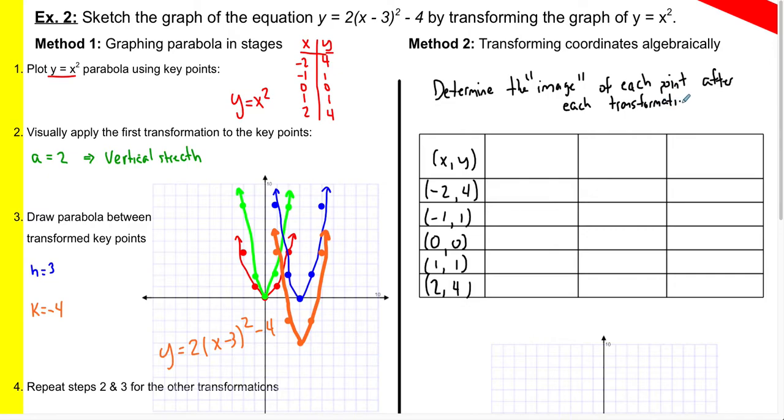So we're going to take the value of a being two. And because a is equal to two, what that means visually, even when we think back to that in green, what we did was we vertically stretched the parabola. Well, that means all the y-coordinates ended up doubling, right? The origin remained where it was, everything else, x stayed the same, and y doubled.